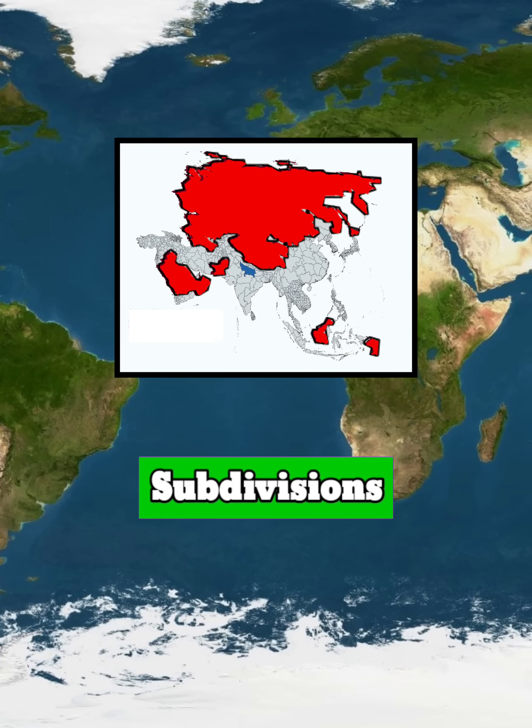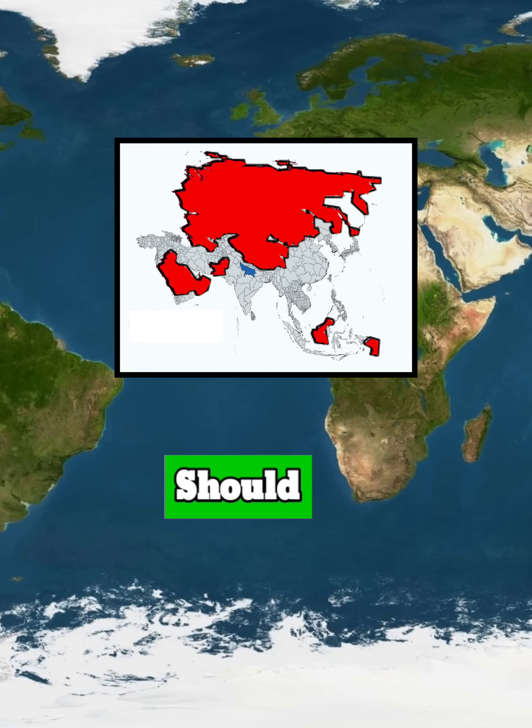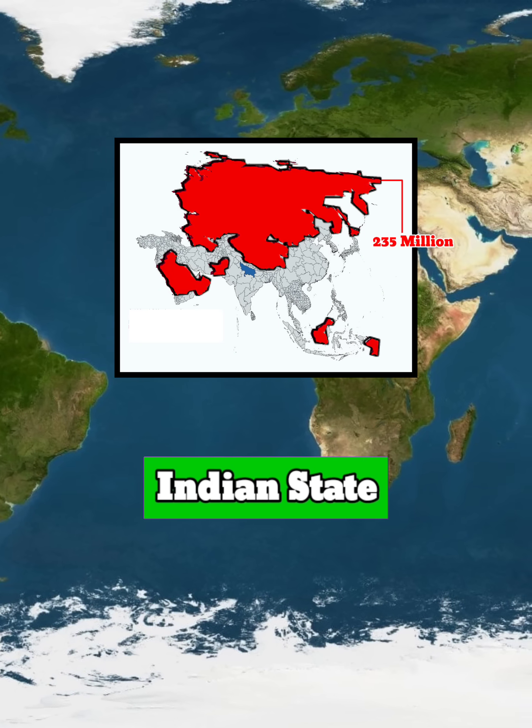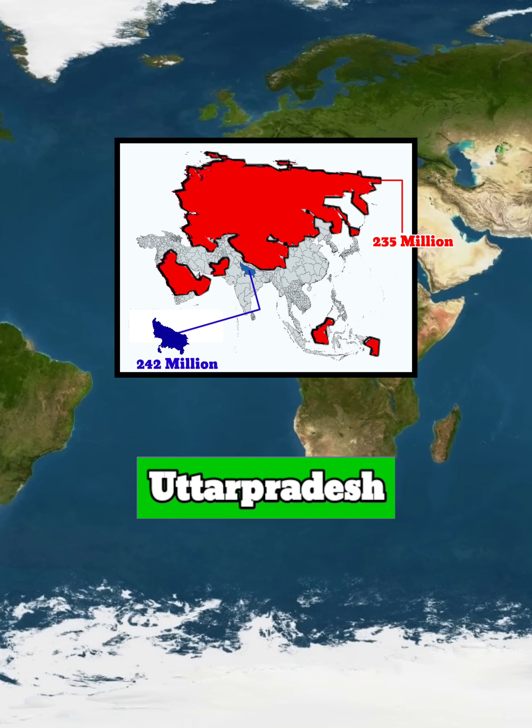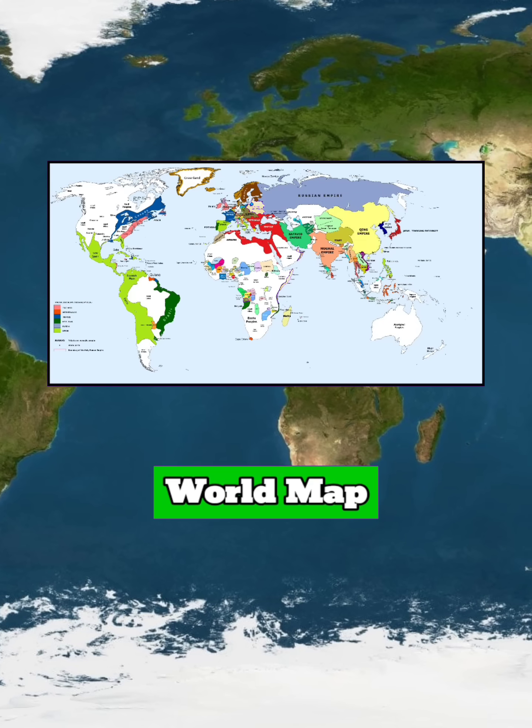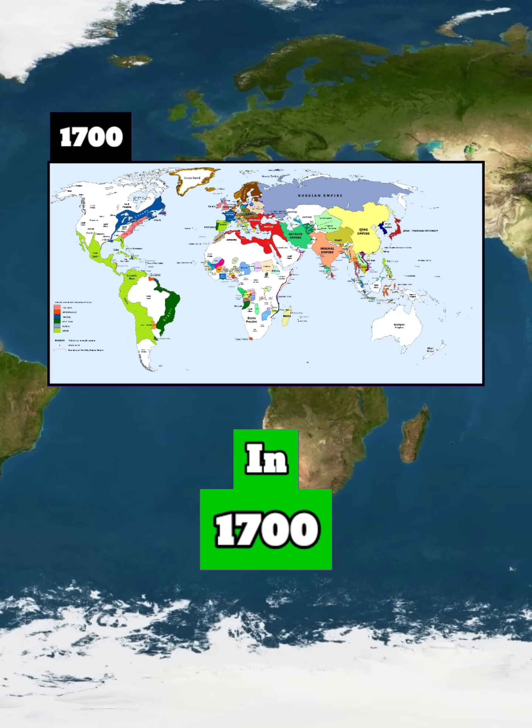These red Asian subdivisions' combined population should be smaller than the Indian state of Uttar Pradesh. This is the world map in 1700.